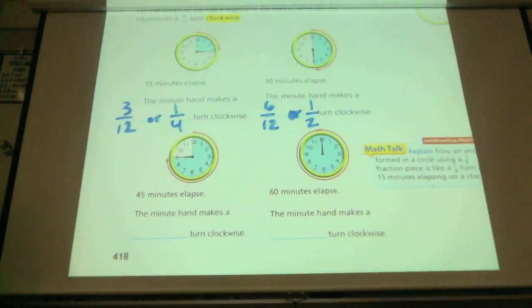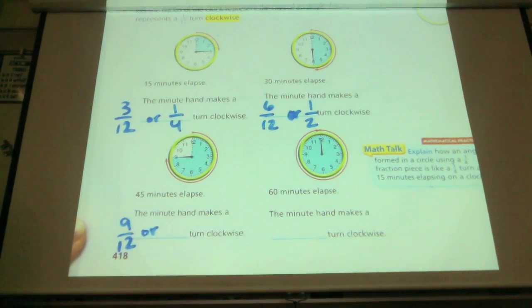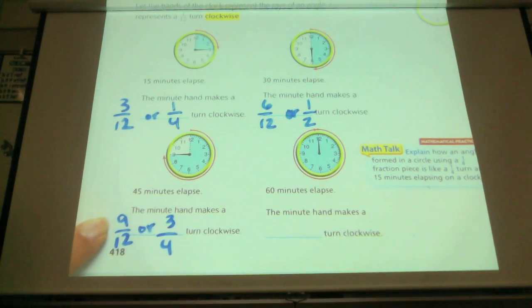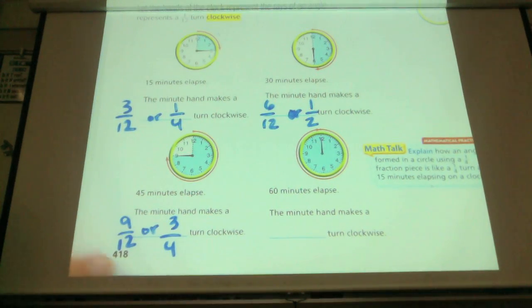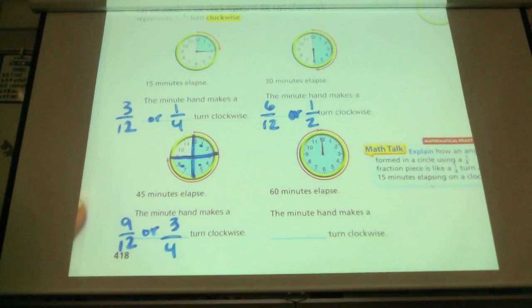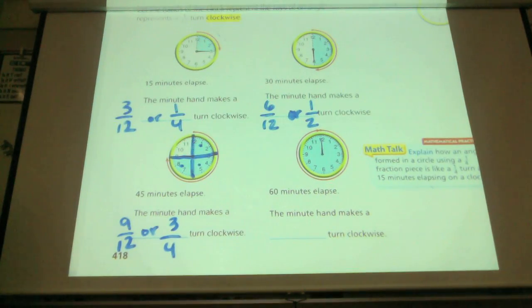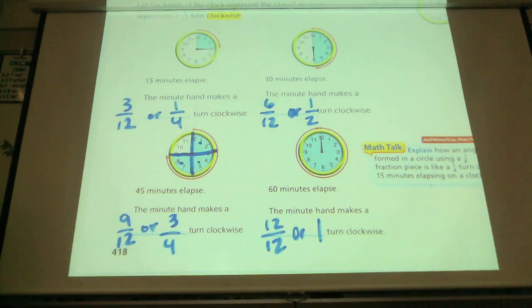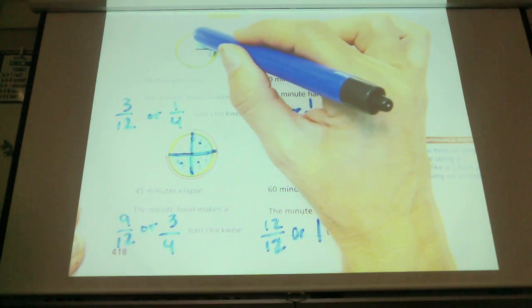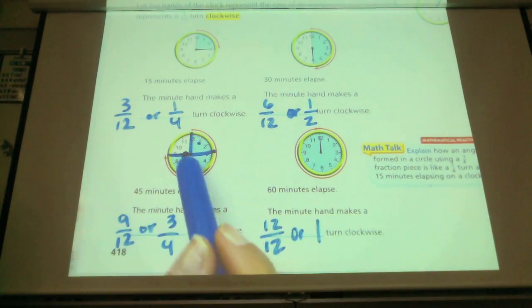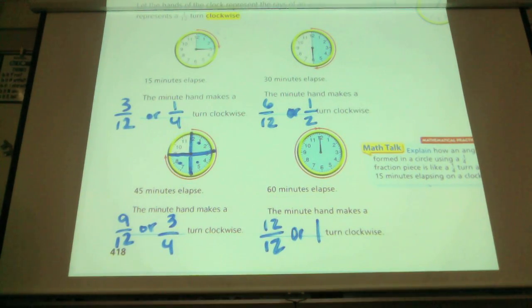How many 12ths to go to the nine? Nine 12ths. These are equivalent fractions — if I reduce 9/12, nine divided by 3 is 3, and 12 divided by 3 is 4, giving three fourths. How many 12ths to go 60 minutes? Twelve, or one whole turn. So the clock hand has moved three 12ths, or one quarter; six 12ths, or one half.